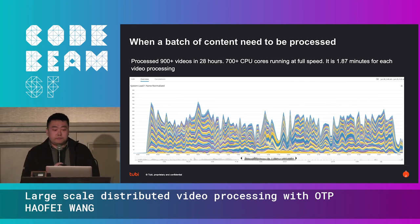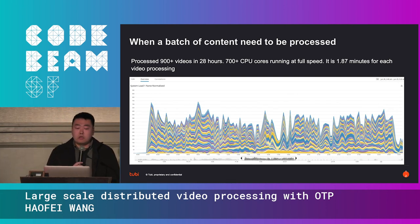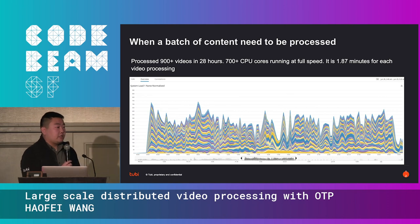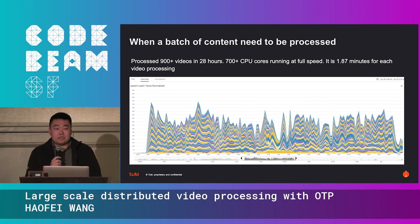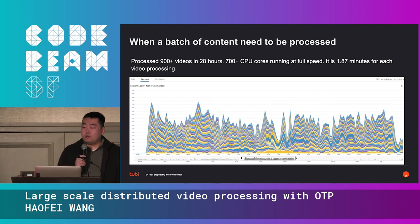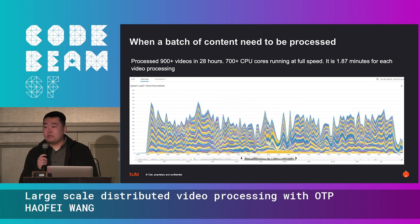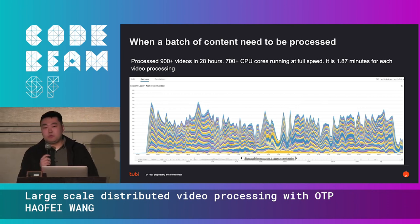Here's what it looks like in real life, from a few months back when we needed to process a batch of content. We finished processing 900-plus videos in 24 hours. At any given time we had over 700 CPU cores running at full speed, and we could go even faster by adding more nodes to the cluster. It averaged about 1.87 minutes per video — and each video is a full-length movie or episode that would take several hours to process on a local laptop.